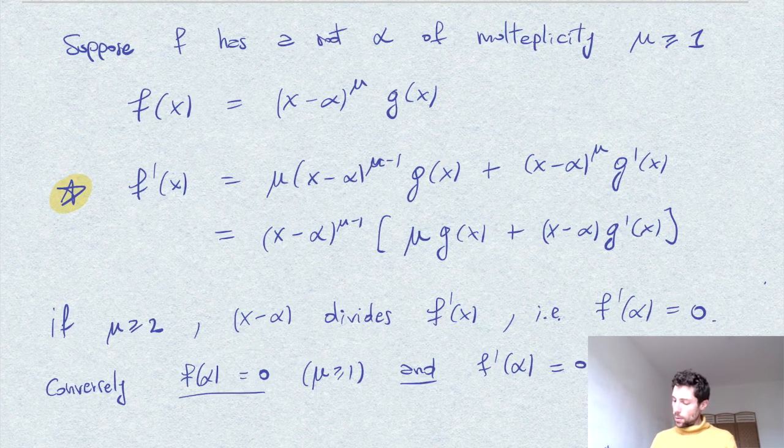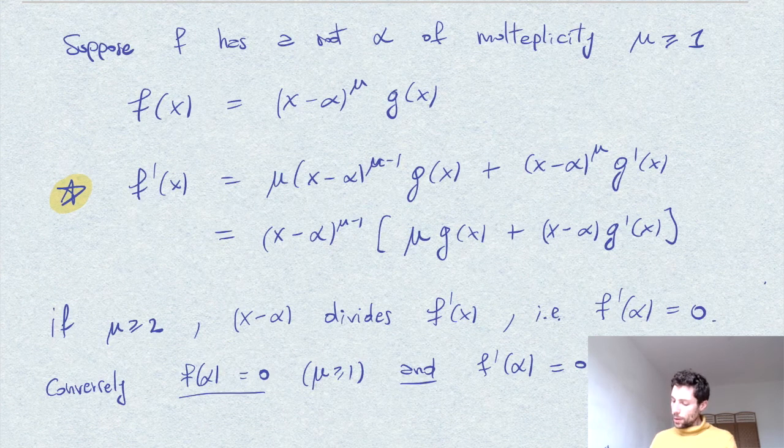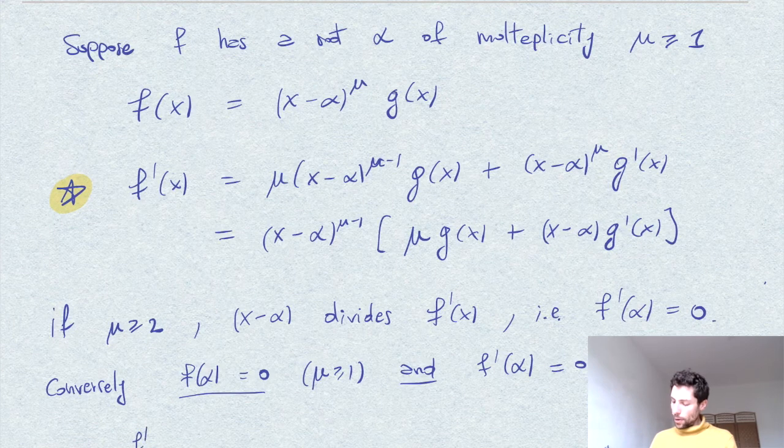then we see that, well, if we substitute for alpha, here we see that f prime of alpha, which is zero by our assumption.